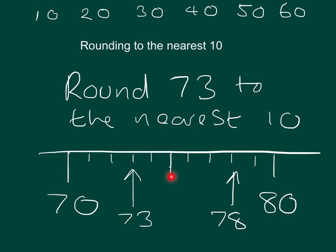But what about at 75? Well, we have a rule, and the rule says at the halfway mark, you round up. So 75 to the nearest 10 is 80. So we round up, and we say 75 to the nearest 10 is 80.